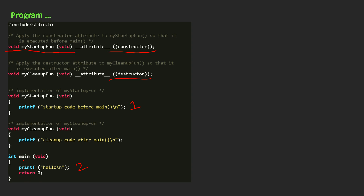Then the main function will end. After that our destructor will be called, and in the destructor part the function 'my_cleanup_fun' is defined. It will call this function and inside this function we will print 'cleanup code after main'. So in the end this line will be executed. The output will be: startup code before main, then hello, and after that cleanup code after main.